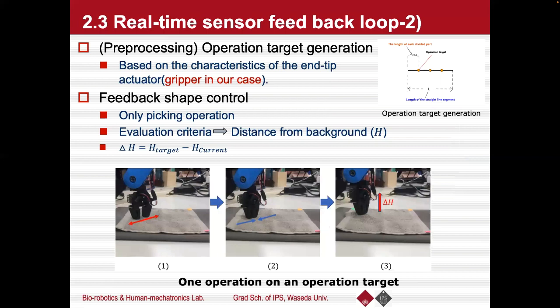The generation of operation targets is based on the feature of the end-effector. Here, since we only use one gripper, we divide each straight-line segment by a certain length and use the split point as the operation target. For the grip control, we use a regular design strategy to achieve the sensor feedback grip control based on the operation targets obtained. And since the limitation of the basic gripper, the evaluation criteria of each operation target is only the distance from the background plane.